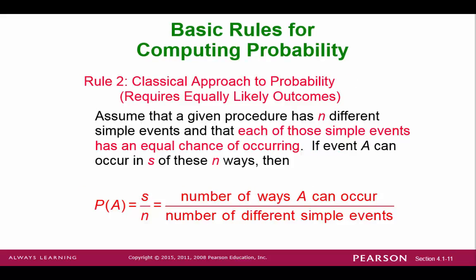The classical approach to probability is dependent on being able to obtain a sample space. If you have S number of ways to get an event A, and there are N total elements in the sample space, then your probability is S over N. For example, tossing a coin has a sample space of head or tail. There is one way to get head and two elements in the sample space, so the probability of getting heads is 1 out of 2, or 50%.